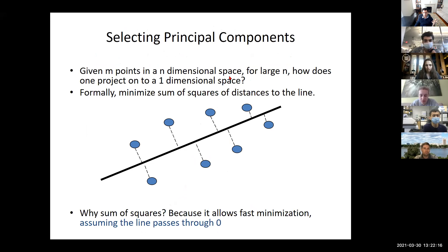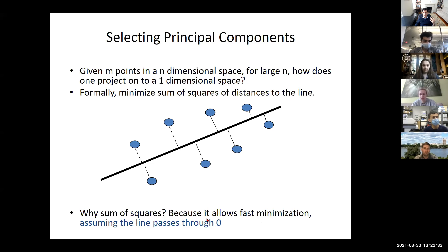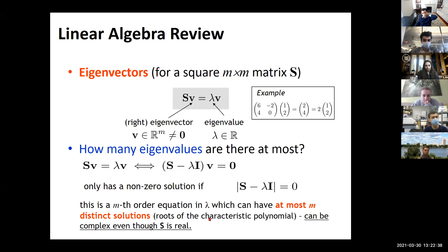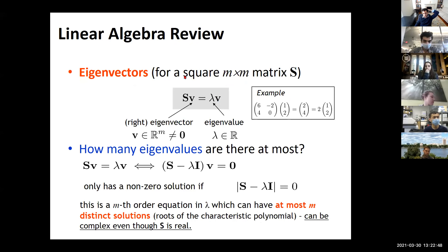To learn principal components, you project data into a set of linear coordinates — a transformation of the original space. Given n points in an n-dimensional space, you project into one-dimensional space and minimize the sum of squares of distances to that line to find the optimal projection. Sum of squares allows fast minimization, assuming the line passes through zero, and is symmetric so you don't have to worry about positives and negatives.